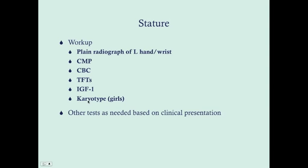In girls, you'll want to get a karyotype. Girls aren't always diagnosed with Turner syndrome early on. If a 13 or 14 year old hasn't started to develop secondary sex characteristics, is shorter, has difficulties in school, and especially if she has webbing of the neck, get a karyotype and look for Turner syndrome. Other tests can be performed as needed based on the clinical presentation.